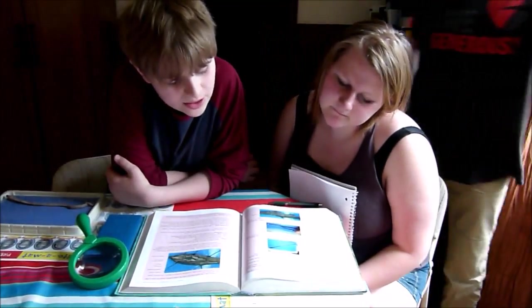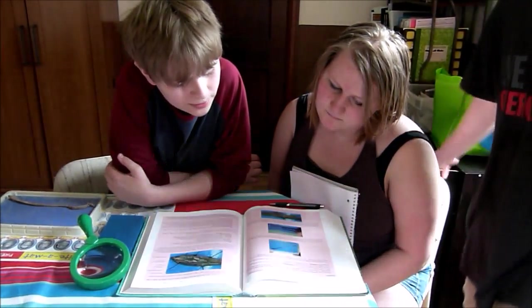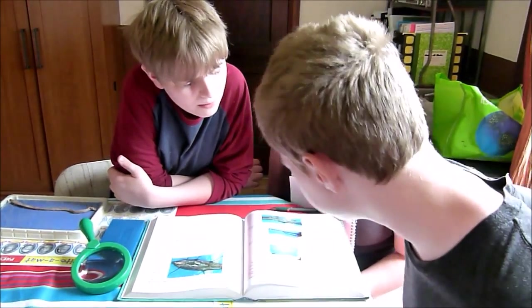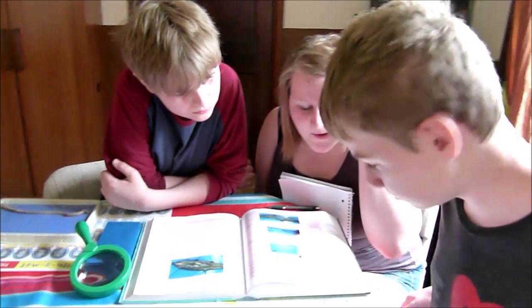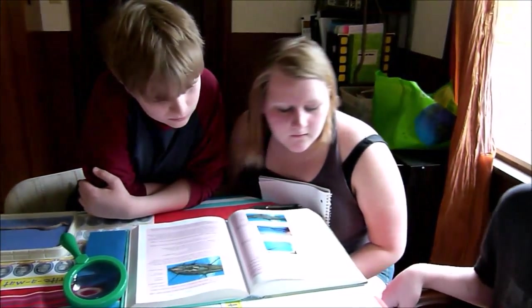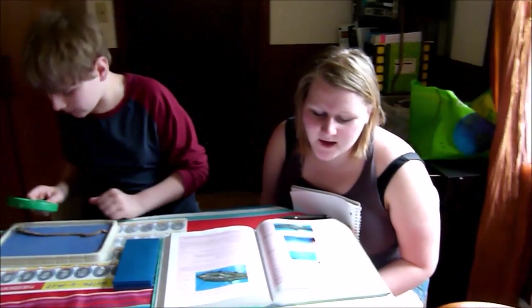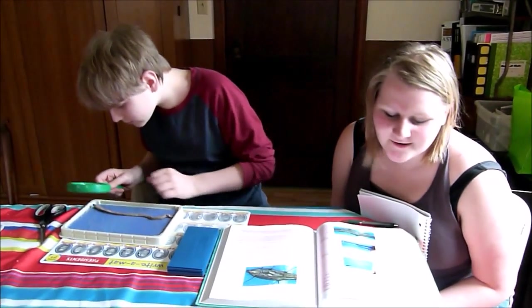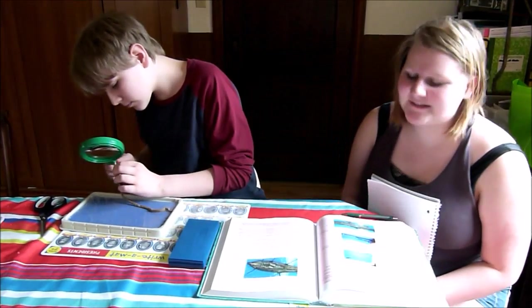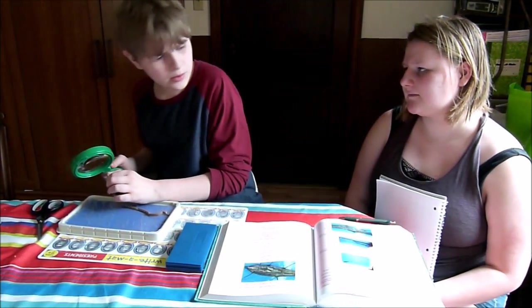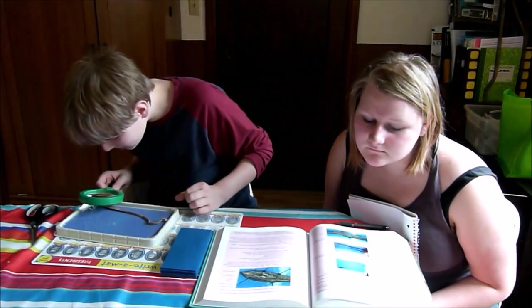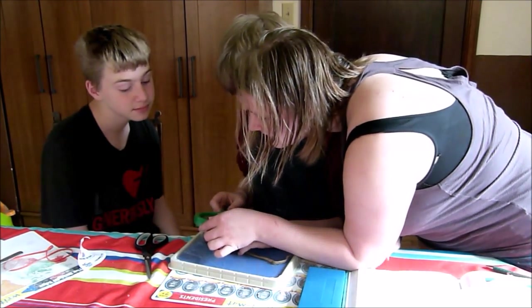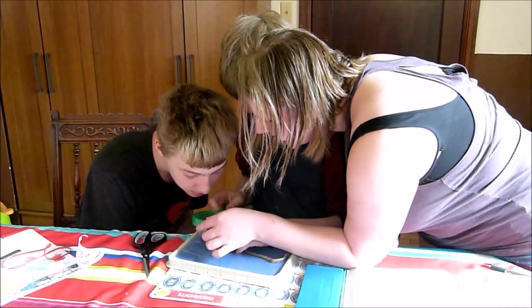Using a magnifying glass, try to find the nephridiopores, which are the tiny holes near the bottom of many segments, anterior and posterior to the clitellum. I hope I said that right. We're looking for little tiny holes by his head and his butt. Look at me. My finger is pointing at it. Yes, I see it.